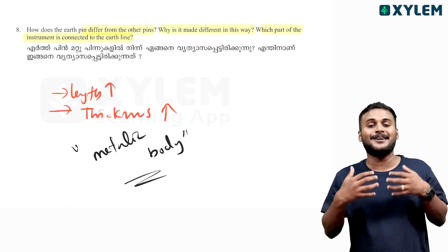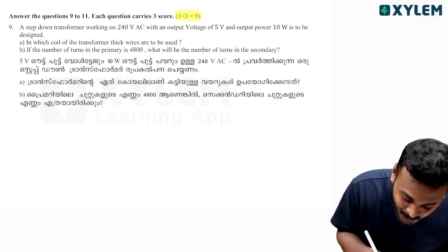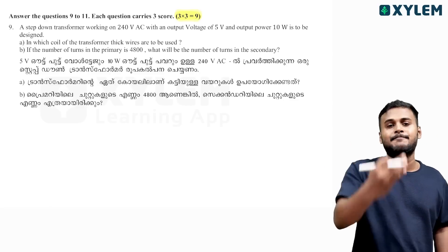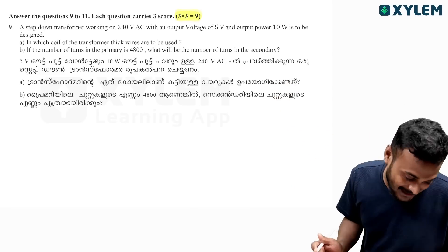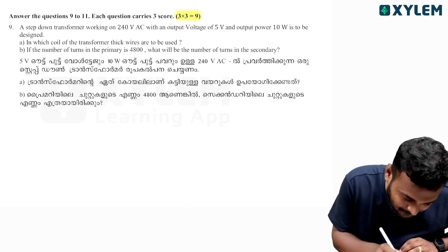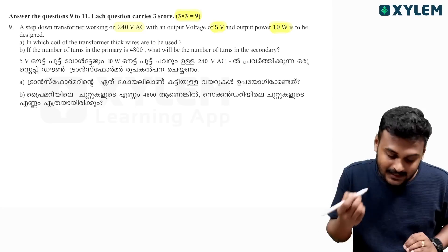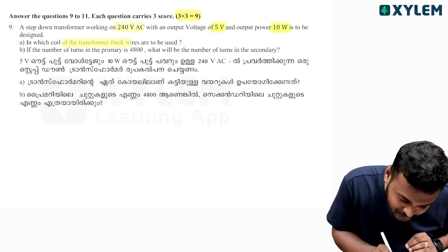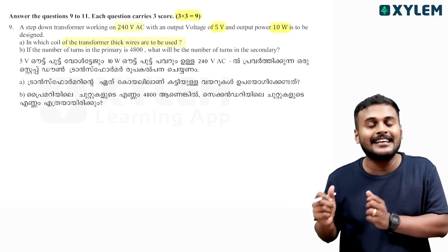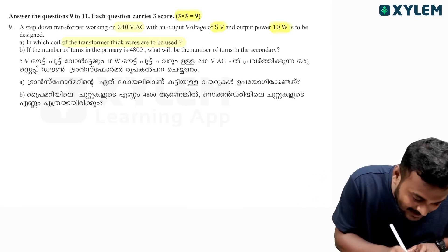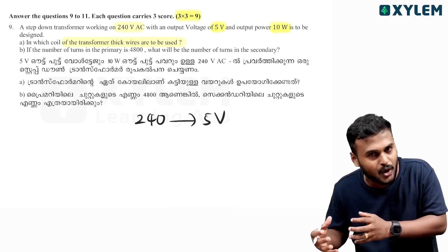Guys, we are moving. If you ask 3 marks — three most important questions from 3 marks — are you ready? Let's move on. A step-down transformer: 260 volts is working voltage, output voltage is 5 volts, 10 watts is power. In which coil of the transformer are thick wires used? This is the step-down transformer. So any coil — thick wires are used in the secondary coil.